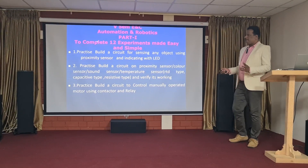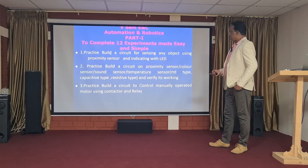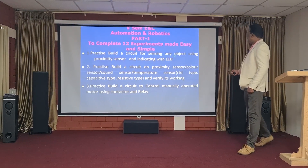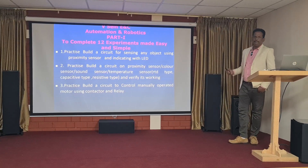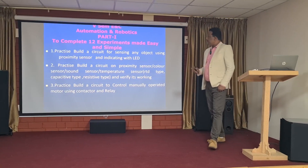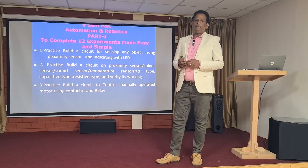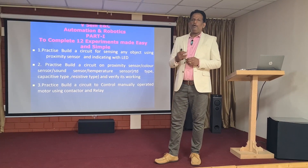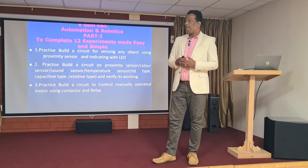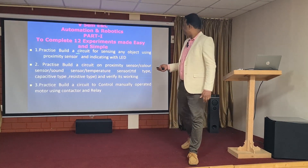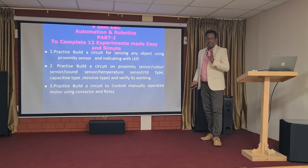In part one we can easily complete 12 experiments. The first one: build a circuit for sensing any object using a proximity sensor and indicating with an LED. This experiment can be done with discrete components, so no need to go for PCBs. Better to use discrete components so that we can complete it with the help of a breadboard itself.